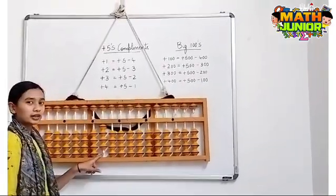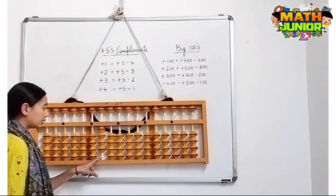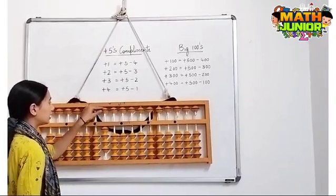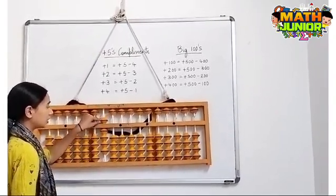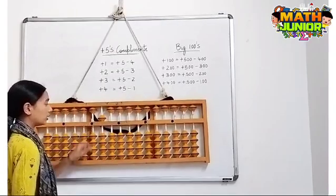I have 400 here and I need to add 100, so the formula for plus 100 is plus 500 minus 400.